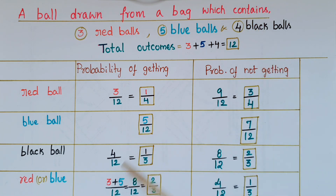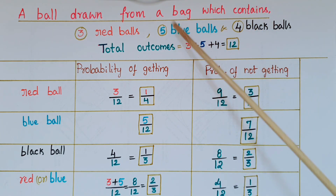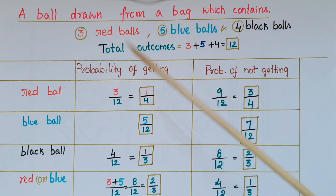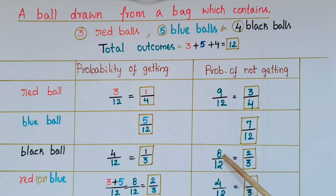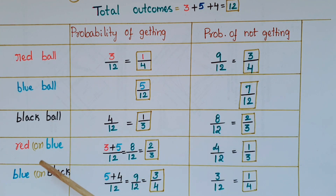Probability of getting a black ball is equal to four by 12, that is one by three. Probability of not getting a black ball: except black balls there are five blue and three red, so five plus three is eight, giving eight by 12 equal to two by three.